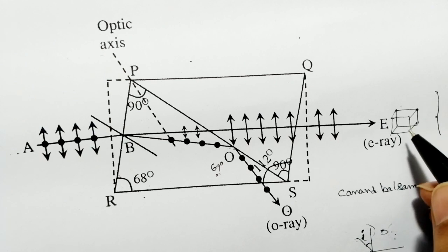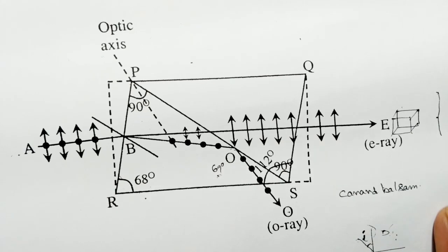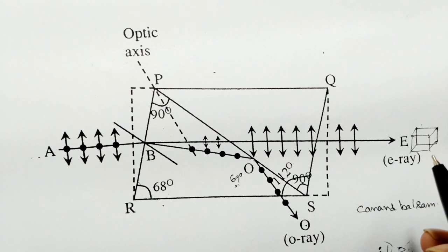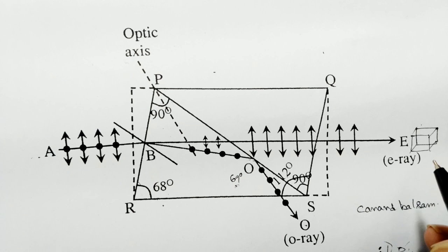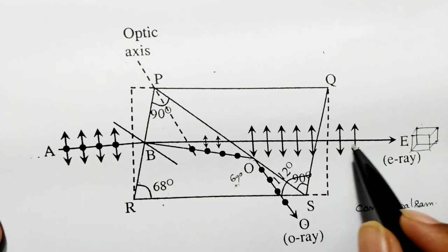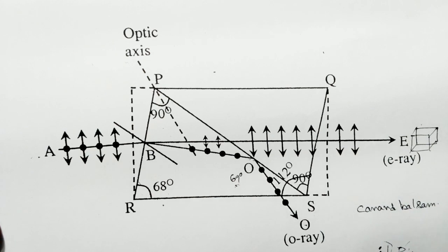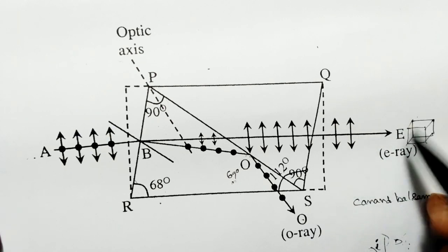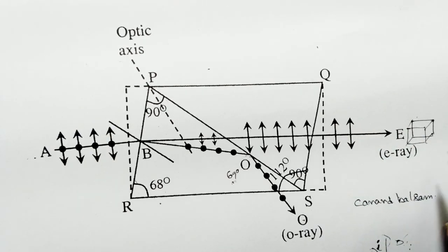In further questions on phase retardation plates, we can convert plane polarized light to circular or elliptical polarized light by attaching the output of the Nicol's Prism to one more crystal. This is a very important question to prepare for examination.